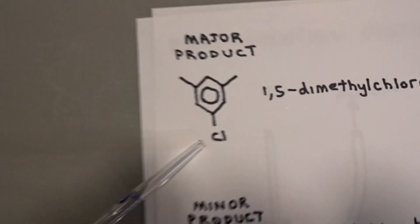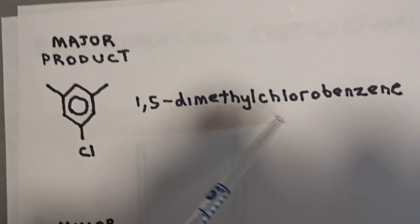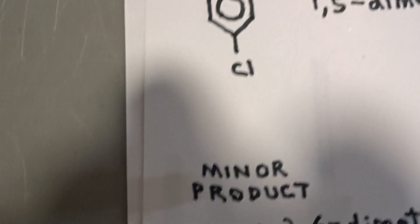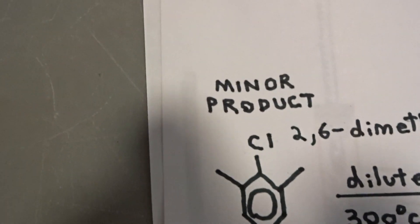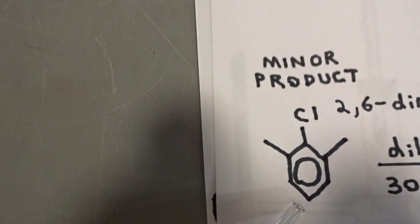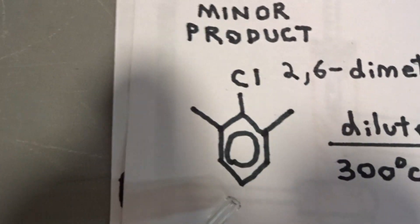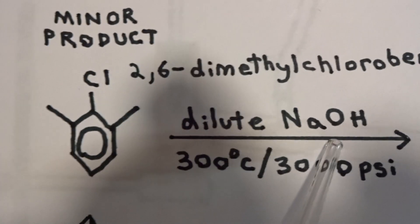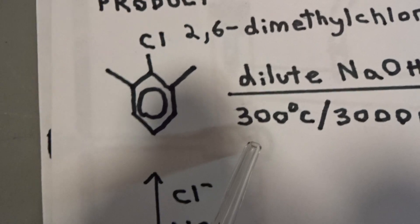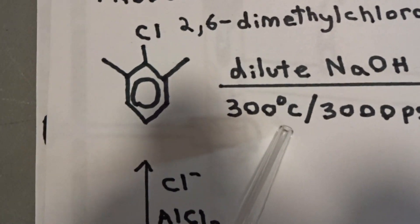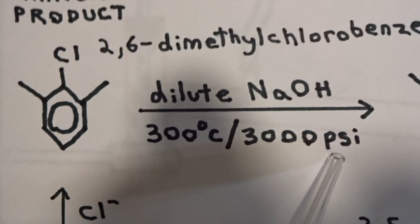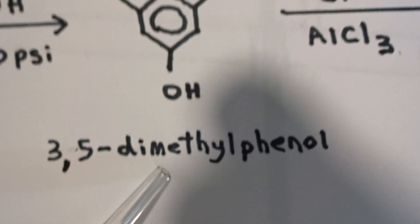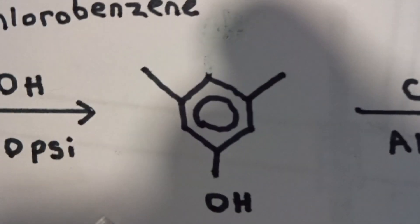So, the major product is 1,5-dimethylchlorobenzene, this molecule, and your minor product, very minor, will be 2,6-dimethylchlorobenzene, but we have no choice but to react this molecule here. React it with dilute sodium hydroxide in the presence of heat, you'll need a furnace at 300 degrees Celsius and 3000 psi, and you will form 3,5-dimethylphenol, this molecule.